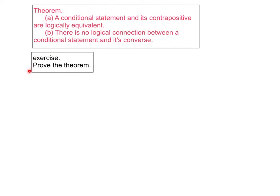It's a good exercise for you to try to prove the theorem. The way you do it is to simply write down the truth table for the given conditional statement, then write down the truth table for the contrapositive, and write down the truth table for the converse. If they turn out to be identical, then they're logically equivalent. And if they turn out to be different, then they're not logically equivalent. I'll leave that for you to do.